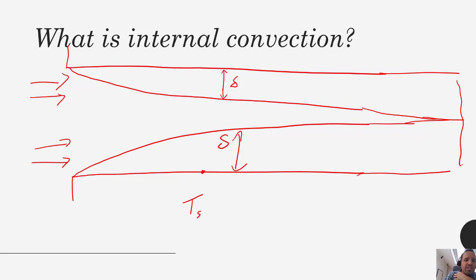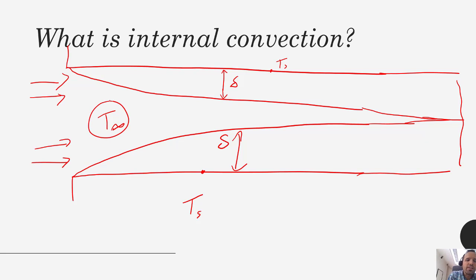In fully developed flow, you no longer have a bulk T_infinity. What you end up with instead is a mean temperature. If you're heating both sides of the channel, that heating is going to change the temperature of the fluid. Because the system is bounded and there's a finite amount of fluid in the channel, we deal with the mean temperature rather than T_infinity.